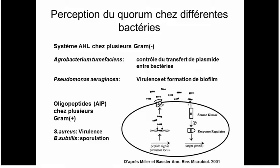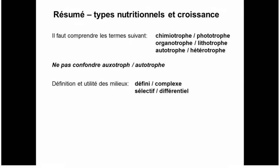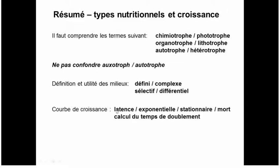So that's quorum sensing — how it works in gram-positives and gram-negatives. For this part of the course, the things to remember: never mix up oxotroph and autotroph — they sound similar but mean entirely different things. For culture media: defined medium, complex medium, selective and differential medium. In the growth curve: lag, exponential, stationary, and death phase, and how to calculate generation time. For control of growth: quorum sensing and switching between free-living pelagic forms and bacteria growing in biofilms.